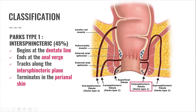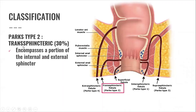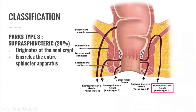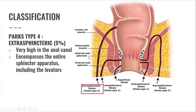Parks type 2, or transsphincteric, encompasses the internal and external sphincters. Parks type 3, or suprasphincteric, originates at the anal crypt and encircles the entire sphincter apparatus. Parks type 4, or extrasphincteric, is very high in the anal canal and encompasses the entire sphincter apparatus including the levators.